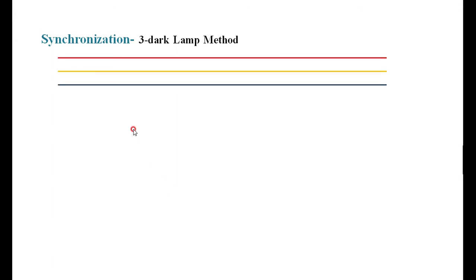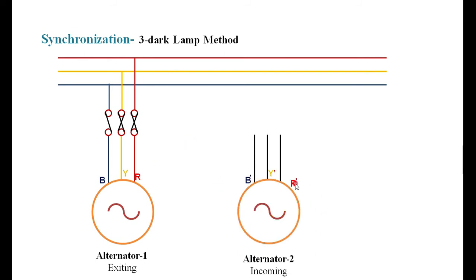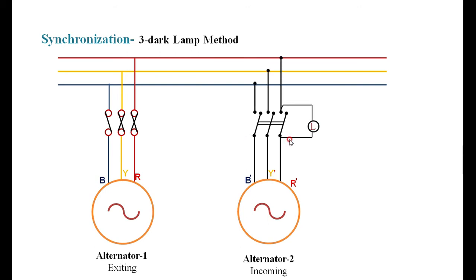One synchronization method I am discussing here is the three dark lamp method. I have a bus bar with R, Y, B phases, and alternator one is the existing alternator already connected to the bus bar. To connect alternator two in parallel, you should not connect directly to the bus bar. Instead, through a switch, I am connecting three lamps across each phase between the alternator and the bus bar — the first lamp, second lamp, and third lamp across all three phases.